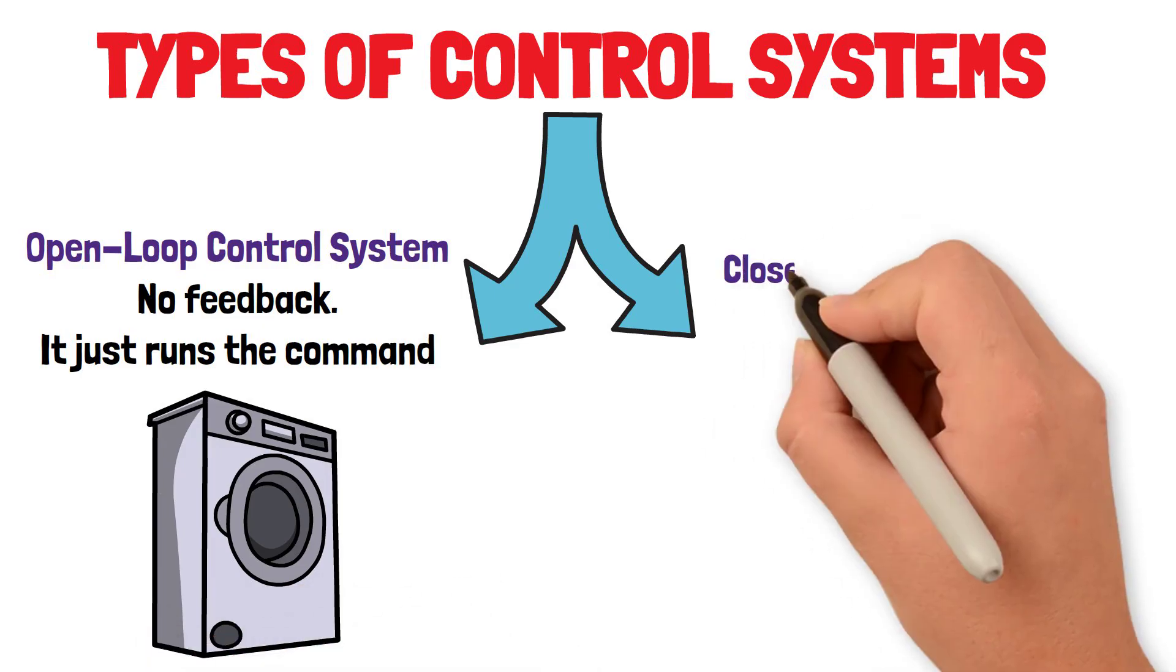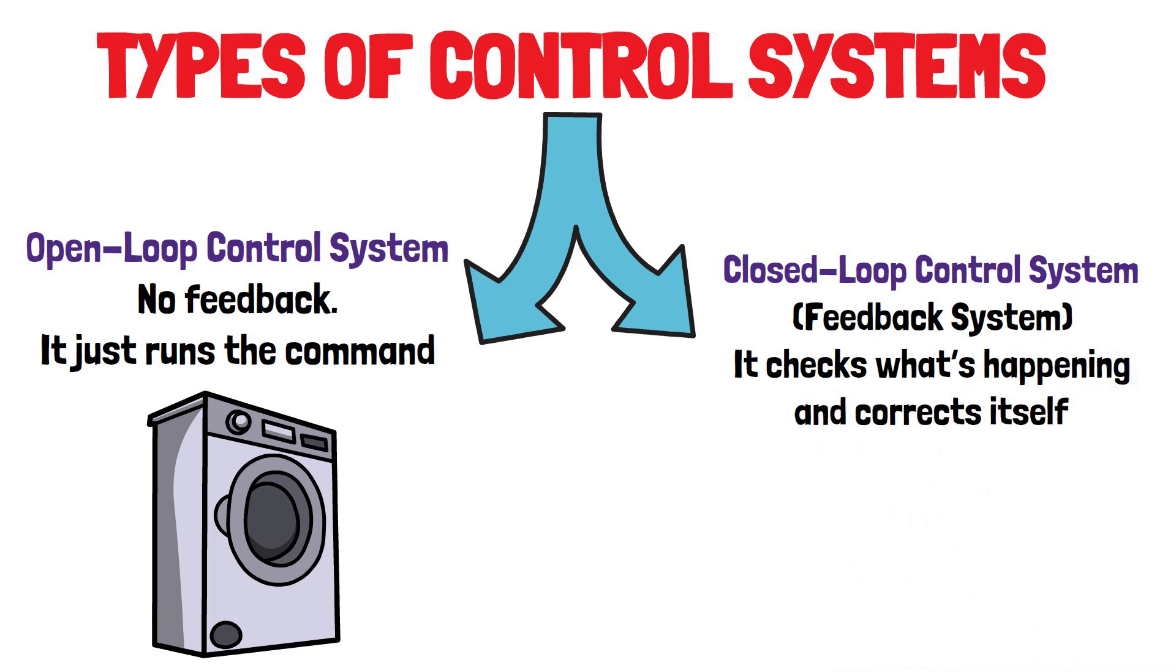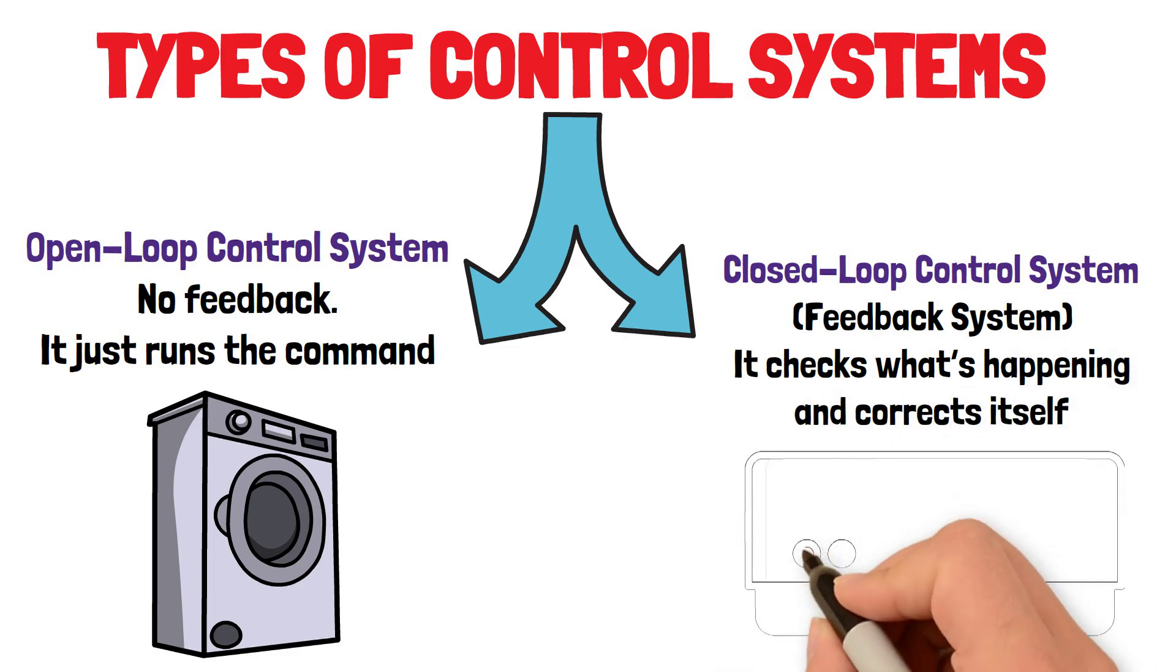Closed loop control system. Feedback system. It checks what's happening and corrects itself. Example: an air conditioner that turns off when the room is cool.